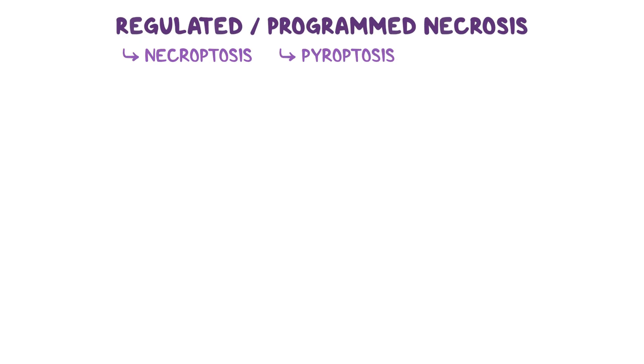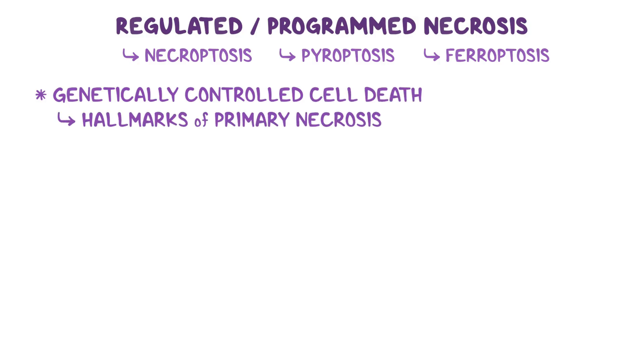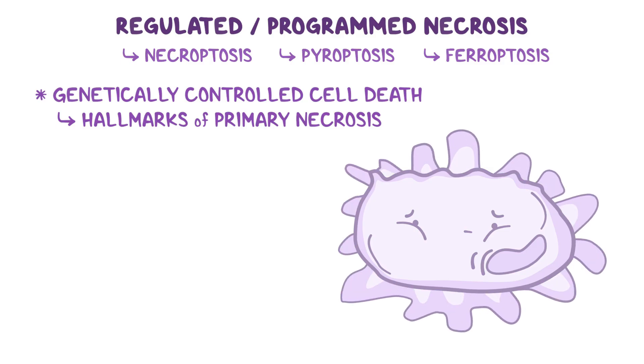Finally, there are regulated or programmed types of necrosis, such as necroptosis, pyroptosis, and ferroptosis. Regulated necrosis is defined as genetically controlled cell death, characterized by hallmarks of primary necrosis, such as cellular swelling and leakage of intracellular contents.